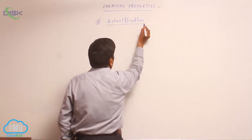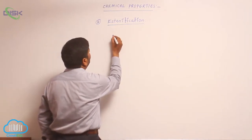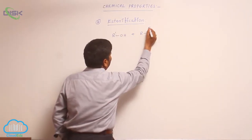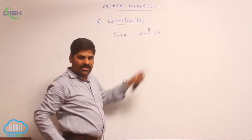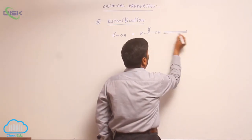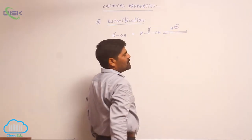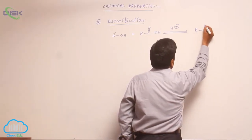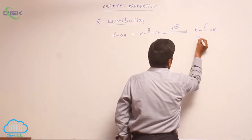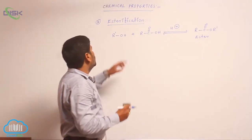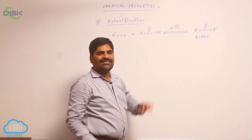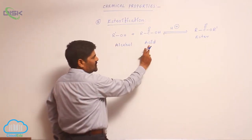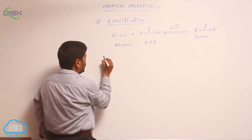An alcohol reacts with a carboxylic acid in the presence of an acid medium to form an ester — written as R-C(=O)-OR'. The formation of an ester from an alcohol and an acid is known as esterification.